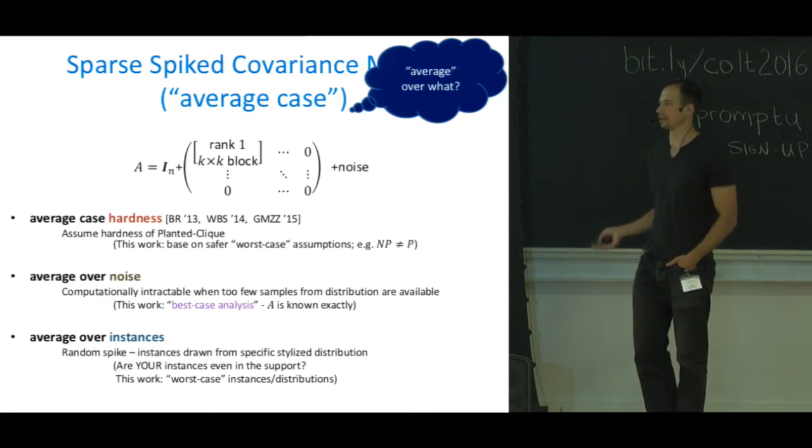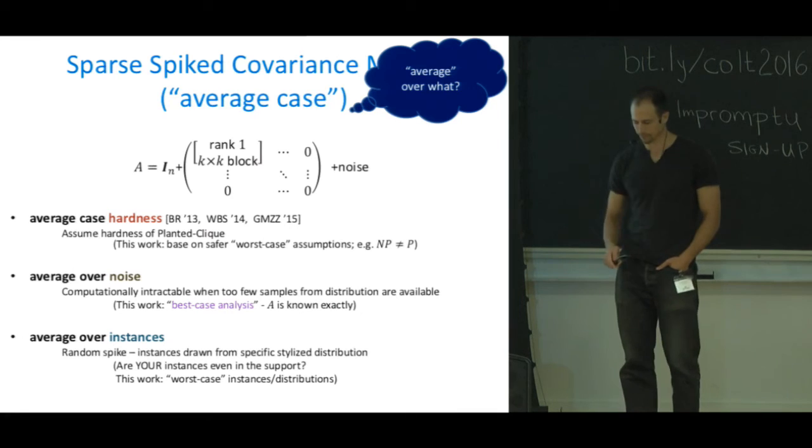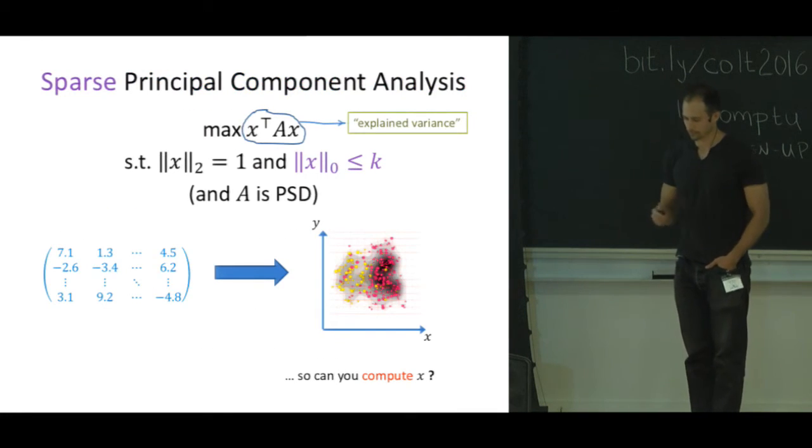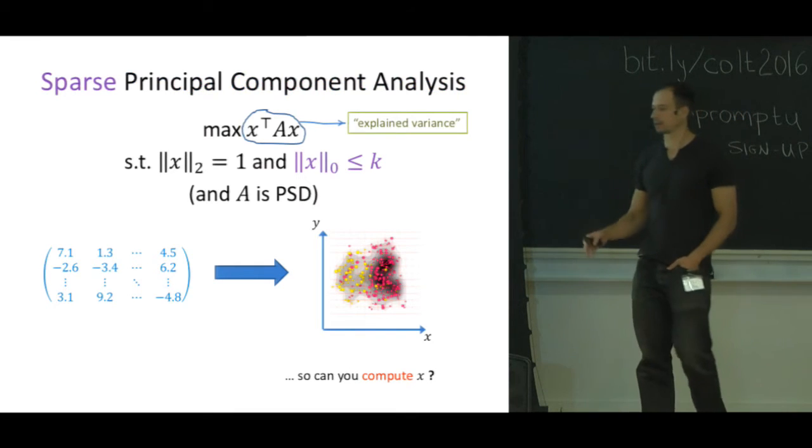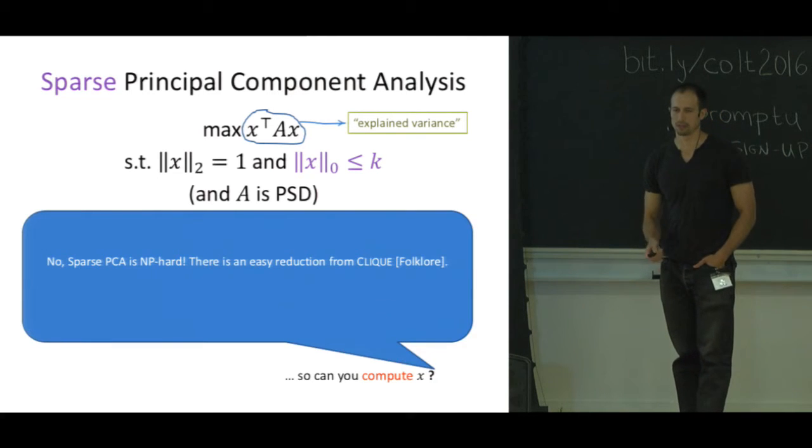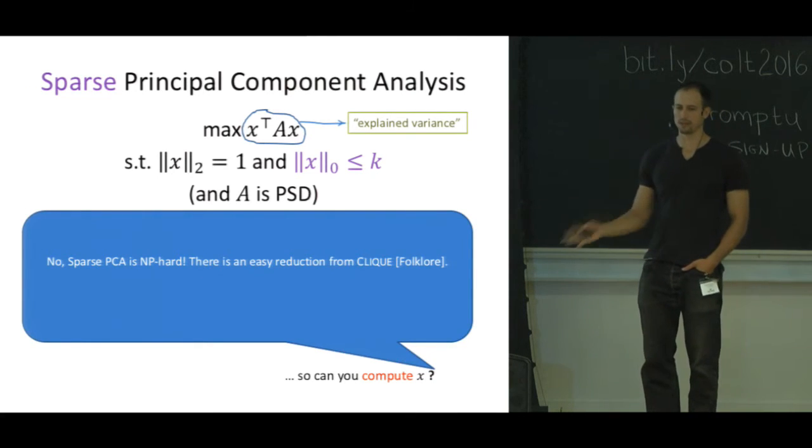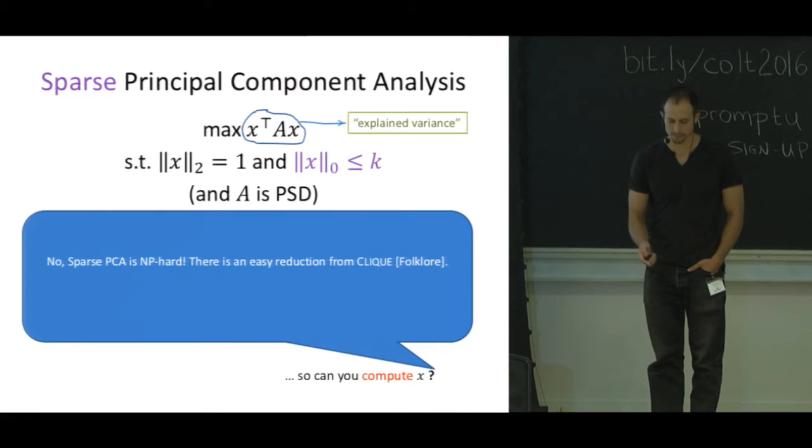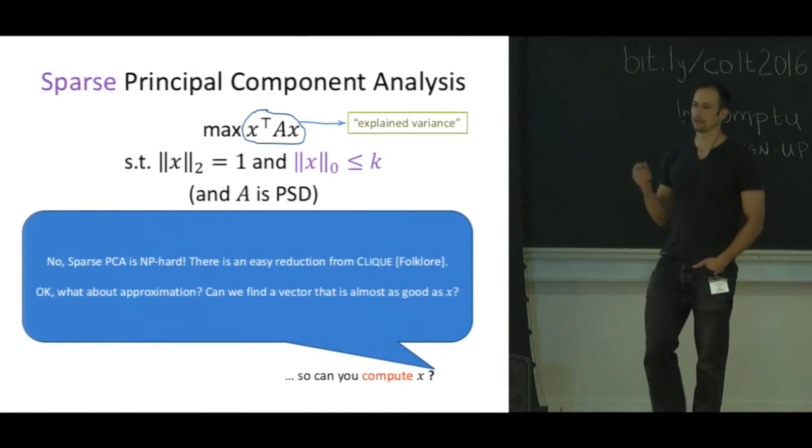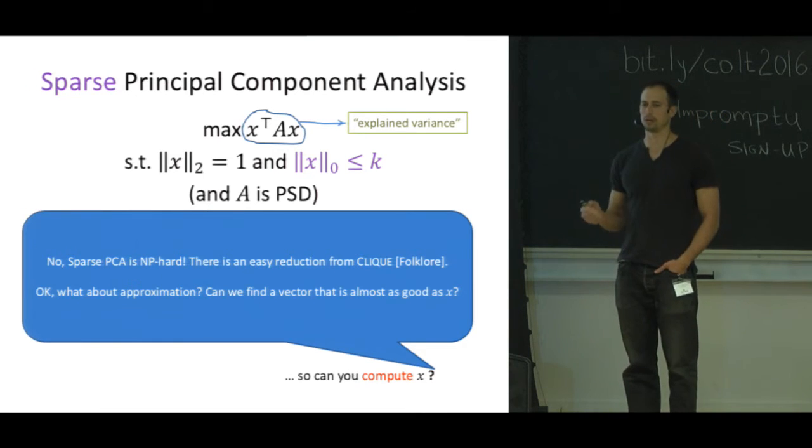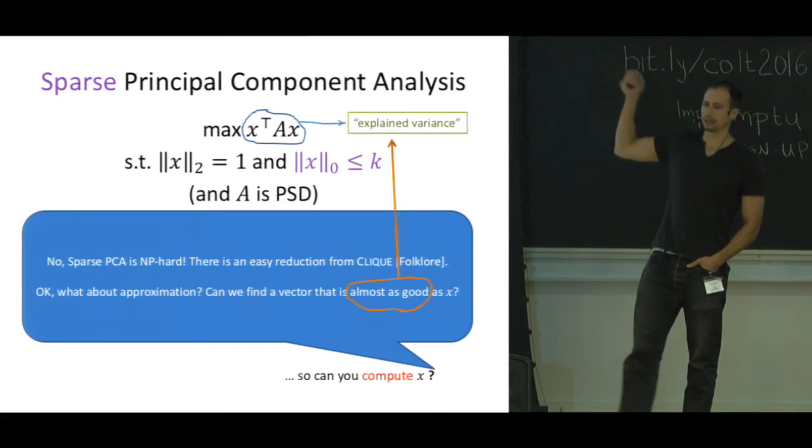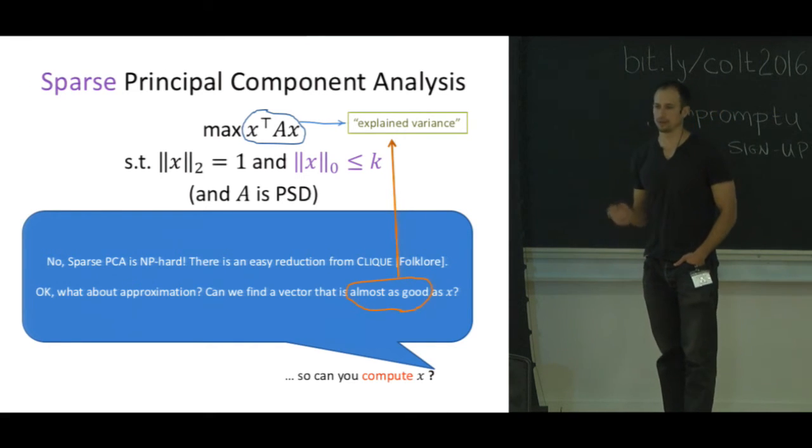Our question was: can we compute this optimal x? The answer is obviously no, it's NP-hard. There's a very easy reduction from clique. The reason I'm still here is that we care about approximation. Can we find an x that's almost as good as this optimal x that gets us this nice picture? By almost as good I mean that you approximate the explained variance, so your explained variance is almost as high.